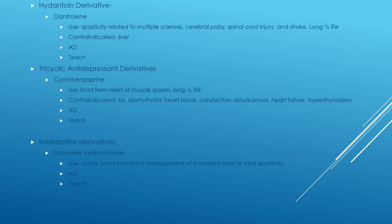Dantrolene works on the muscles peripherally and inhibits the release of calcium, which decreases the strength of muscle contractions. It's used for spasticity in individuals with multiple sclerosis, cerebral palsy, and spinal cord injuries and strokes. It has a long half-life, which is particularly important for older patients. Remember, it is also used for malignant hyperthermia.